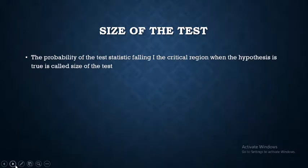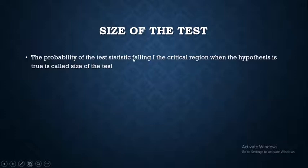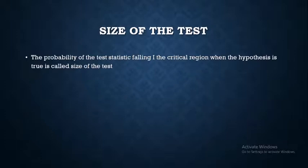The size of the test is the probability of the test statistic falling in the critical region when the hypothesis is true, and it is also known as the significance level. Falling in the critical region means falling in the rejection region.